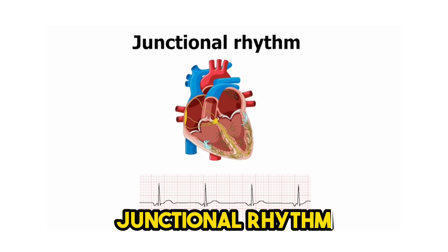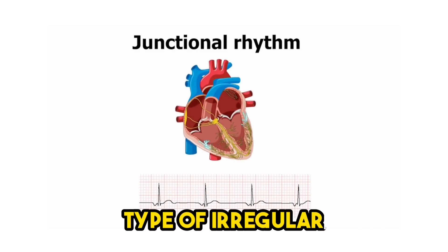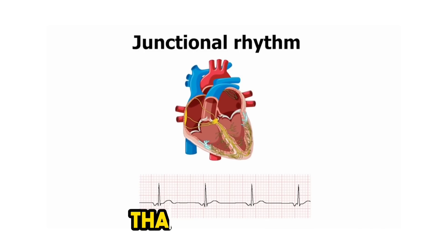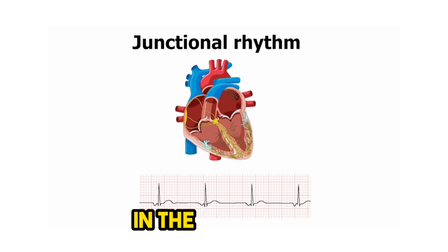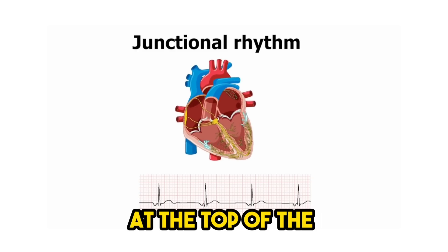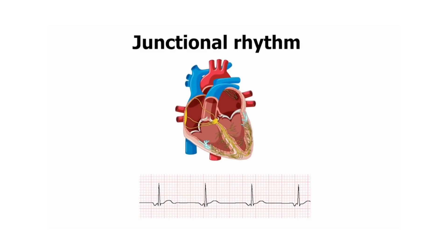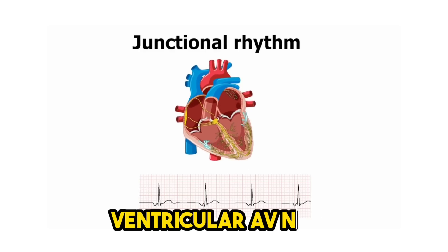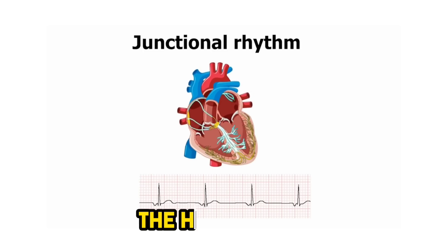Junctional rhythm is a type of irregular cardiac rhythm that arises when electrical impulses that ordinarily originate in the sinoatrial, or SA, node at the top of the right atrium instead originate in the atrioventricular, or AV, node or the bundle of His. As a result, the heart beats too slowly or too fast.